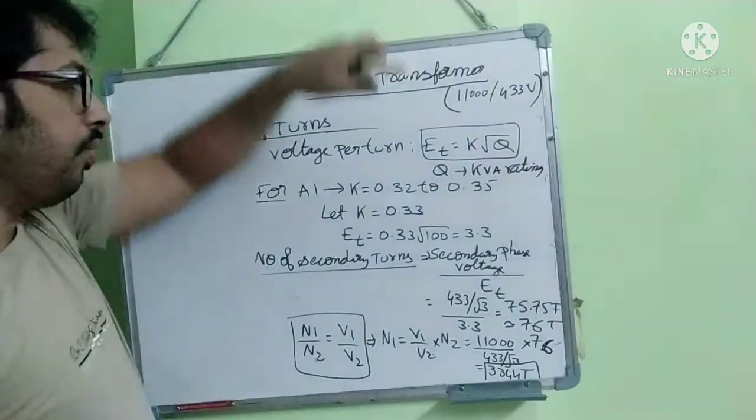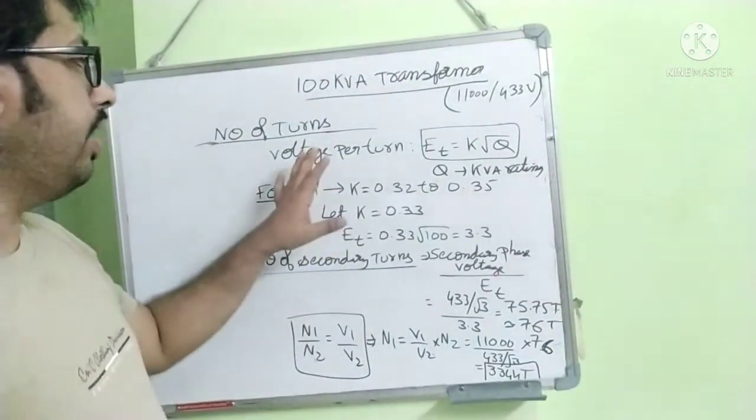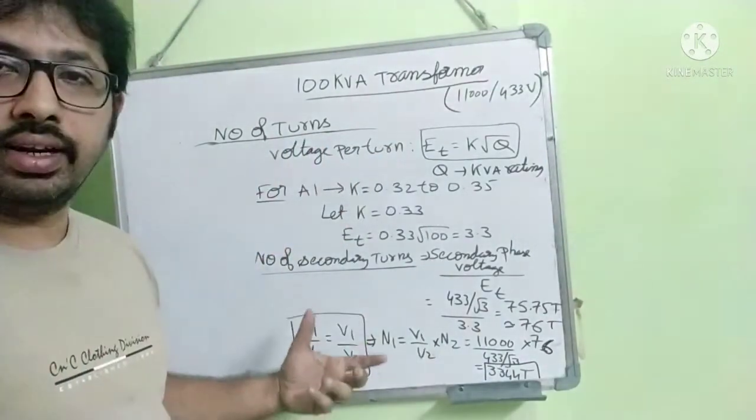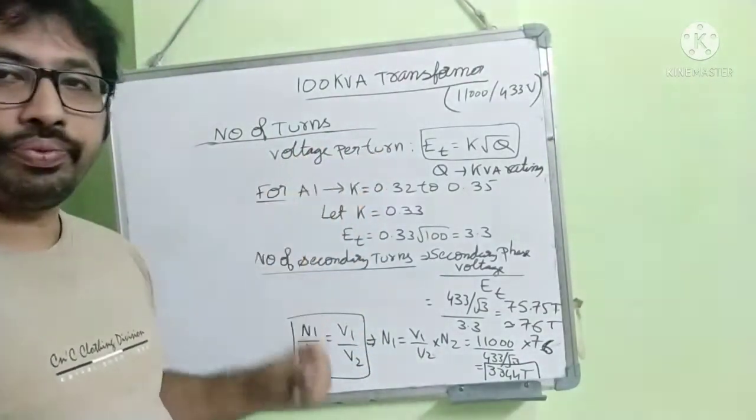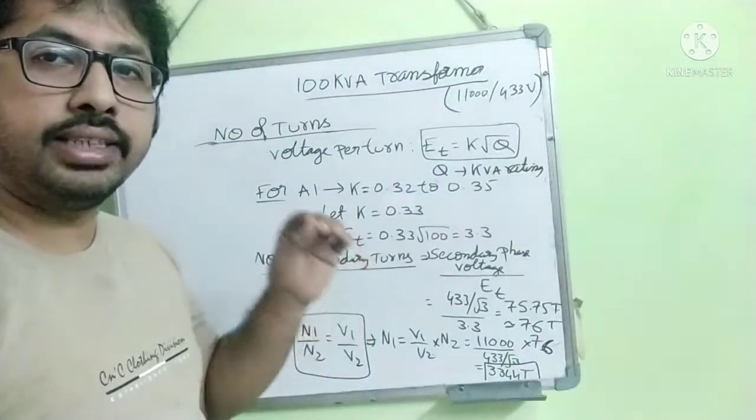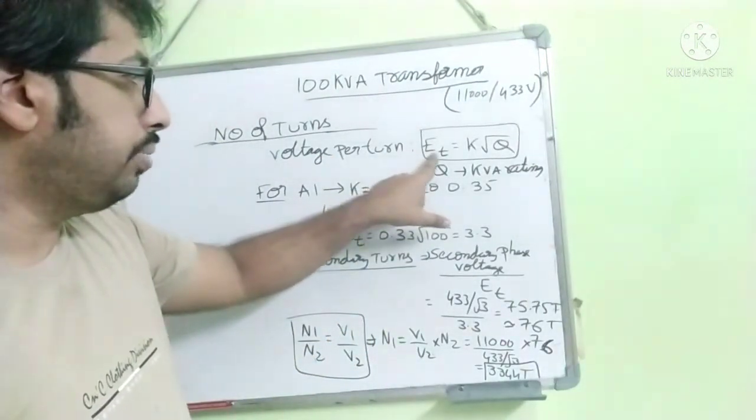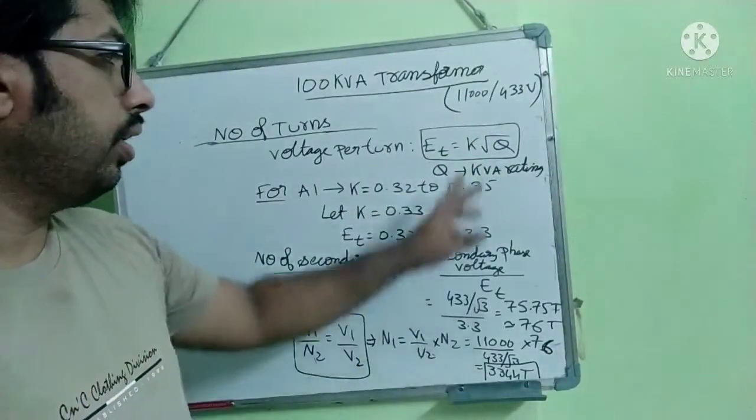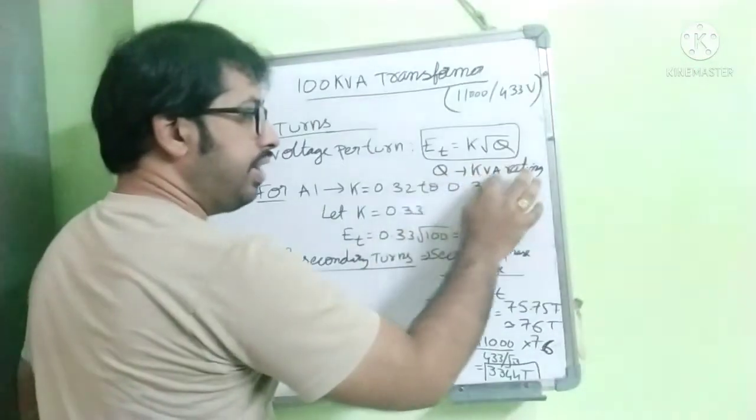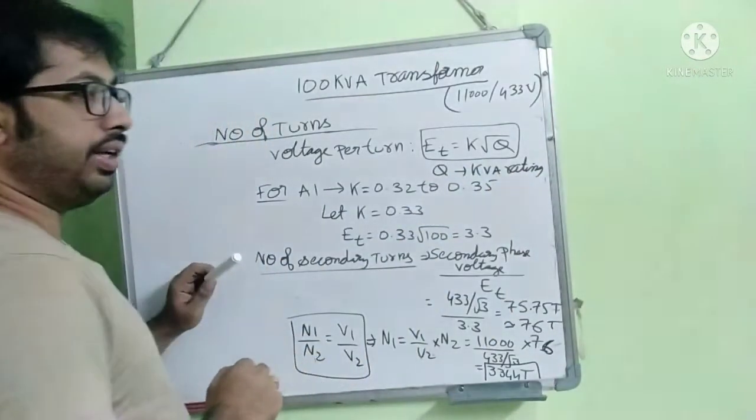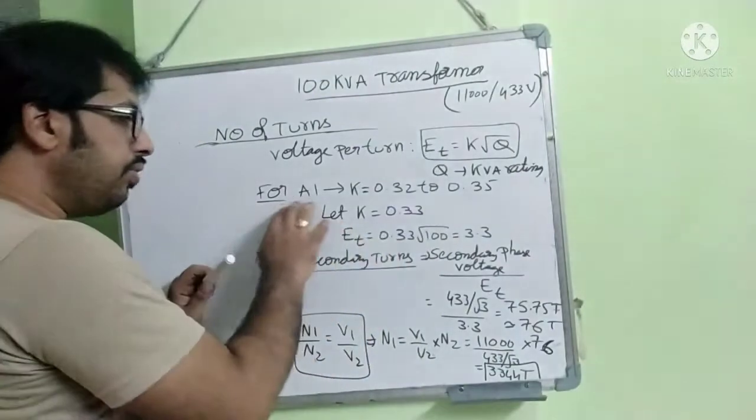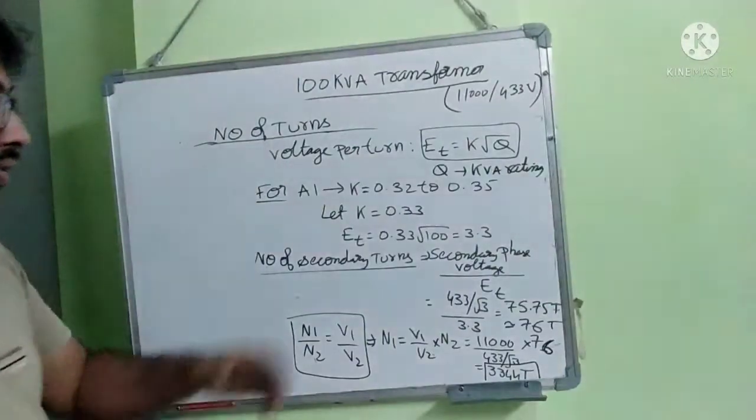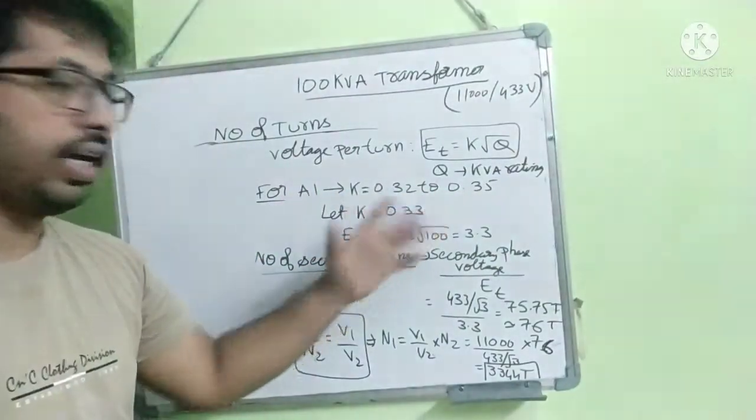To find number of turns, very important is to find voltage per turn. If you get this then easy to calculate. Voltage per turn has a formula. Voltage per turn is K under root Q, where Q is a kVA rating. And K value for aluminum winding is 0.32 to 0.35. In between these two values we should take the K value.